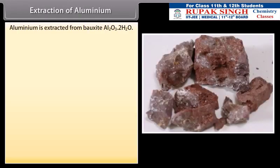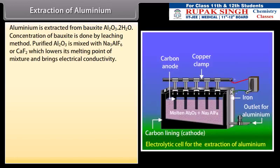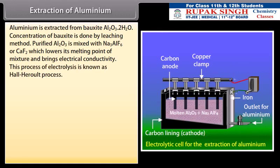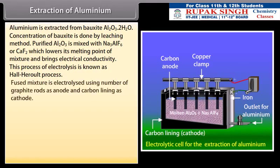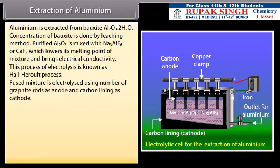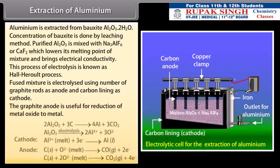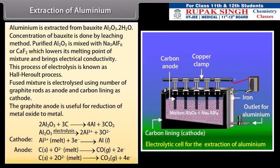Extraction of aluminium. Aluminium is extracted from bauxite Al2O3·2H2O. Concentration of bauxite is done by leaching method. Purified Al2O3 is mixed with Na3AlF6 or CaF2 which lowers its melting point of mixture and brings electrical conductivity. This process of electrolysis is known as Hall-Heroult process. Fused mixture is electrolyzed using number of graphite rods as anode and carbon lining as cathode. The graphite anode is useful for reduction of metal oxide to metal.